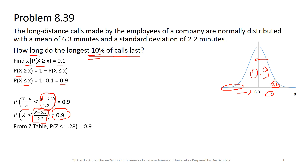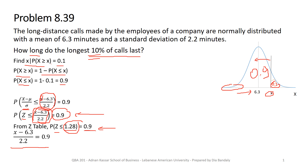From the Z table, the probability of Z less than 1.28 is 0.9. Look at these two equations: both equal 0.9, and both have Z on the left side — so the terms must be equal. We can write that (x − 6.3) / 2.2 = 1.28. Solving for x, which is the only unknown, we find x equal to 9.2 minutes.